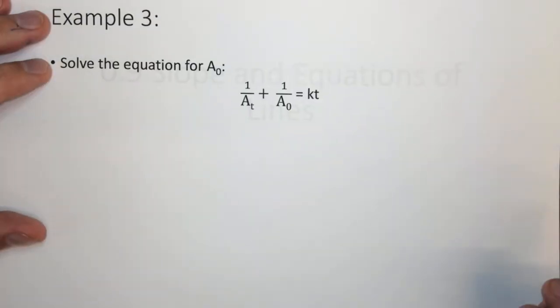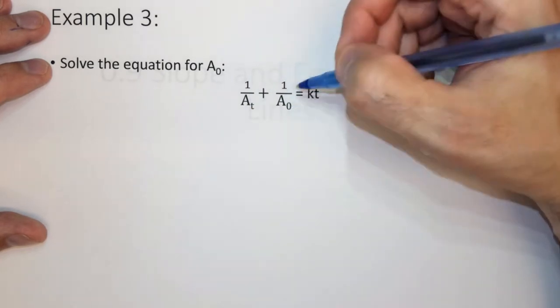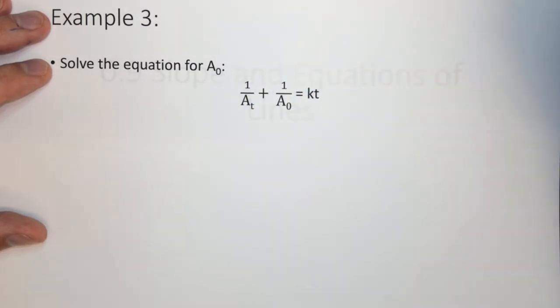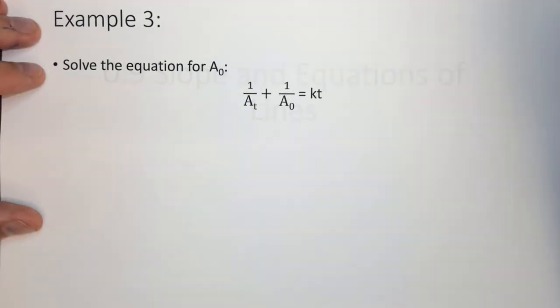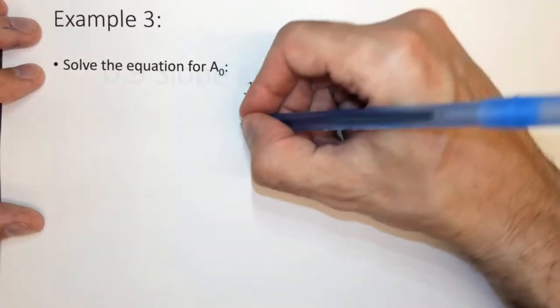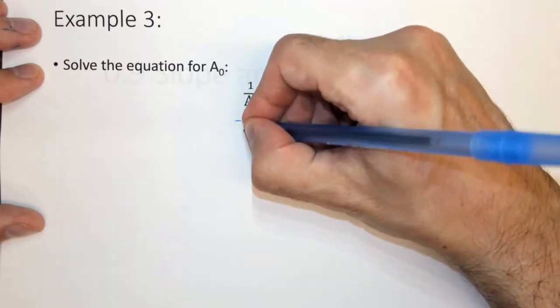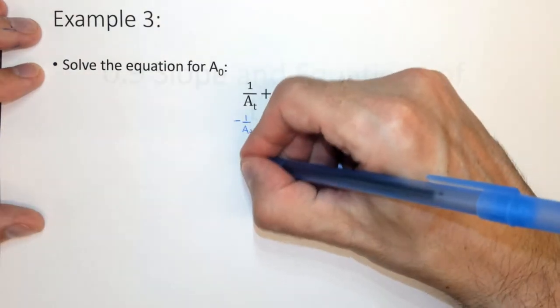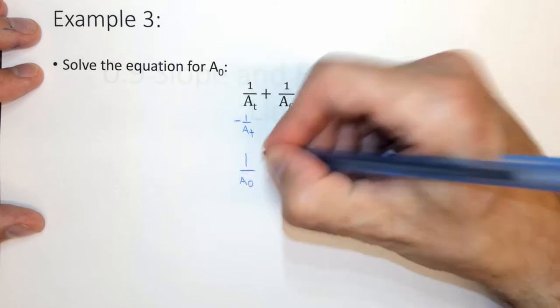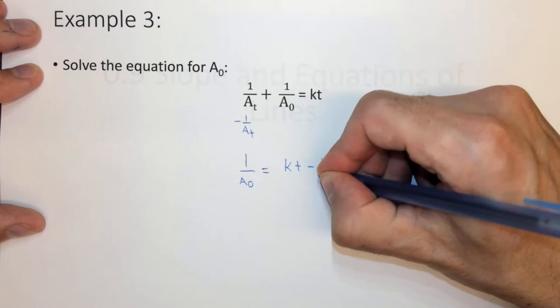Here's a little bit more complex kinetics example, where we have 1 over A at time plus 1 over A at time 0 equals KT. Now we're asked to solve for A0. So the first thing I want to do is, because this is addition, I want to subtract 1 over A at some time. And what I get is 1 over A at time 0 equals KT minus 1 over A at some time.